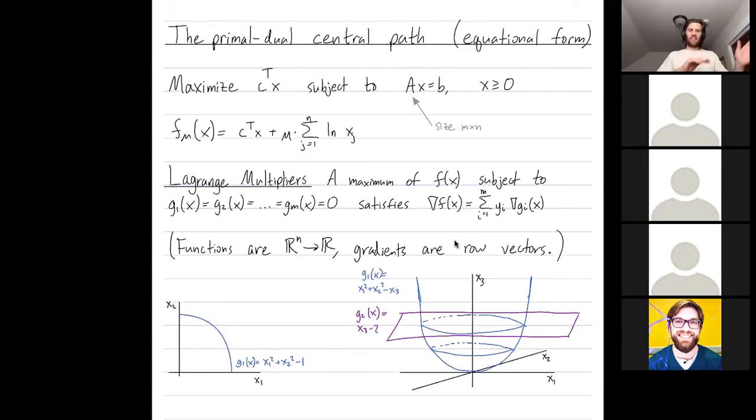Okay, let me describe Lagrange multipliers completely separate from linear programming briefly. You're trying to maximize a function subject to constraints equaling zero, and you're in the setting where your functions are differentiable. Lagrange multiplier says that the gradient of the function you're trying to optimize at an optimum solution can be written as a linear combination of gradients of your constraints. And these yis are your Lagrange multipliers.